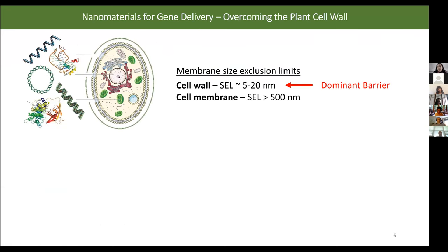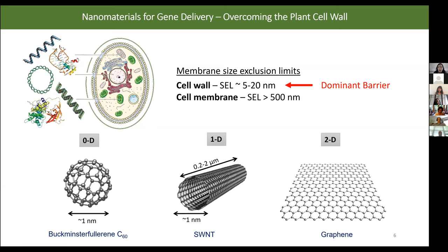To do so, we have to consider what our barriers are — specifically the size exclusion limit. The size exclusion limit of a lipid membrane or cell membrane is approximately 500 nanometers, which is the dominant barrier for most cell types. However, the size exclusion limit of the plant cell wall, uniquely found in plant cells, is only 5 to 20 nanometers, and this becomes the dominant barrier we have to consider.